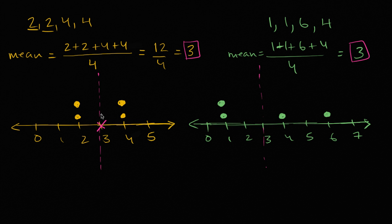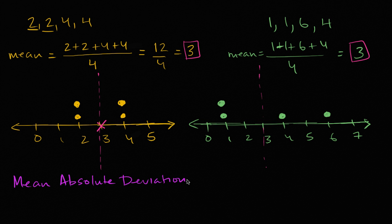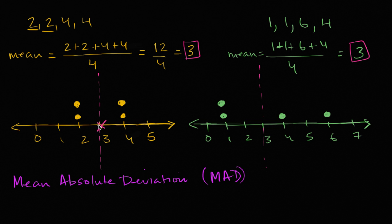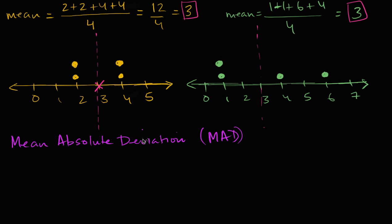One straightforward way to think about variability is: on average, how far are each of the data points from the mean? What we're about to calculate is called mean absolute deviation, or MAD. We figure out how much each point deviates from the mean in absolute terms — so a point at two is one away from the mean, whether it's less or more — and then we find the mean of all those deviations.